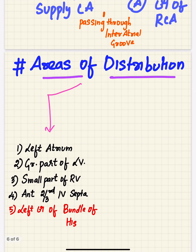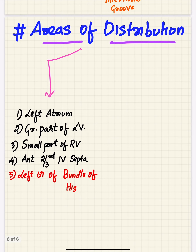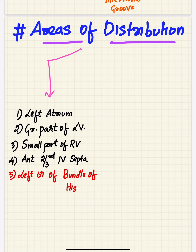Areas of distribution of the left coronary artery include the left atrium, the greater part of the left ventricle, a part of the right ventricle, the anterior two-thirds of the interventricular septum anteriorly, and the left branch of the bundle of His.